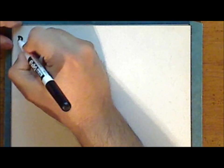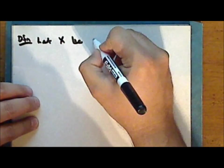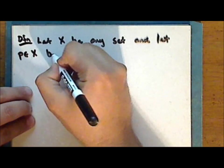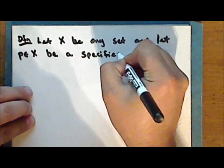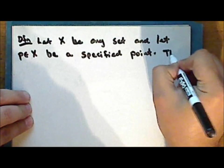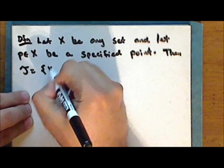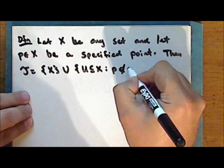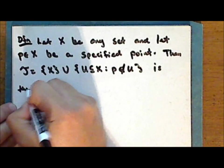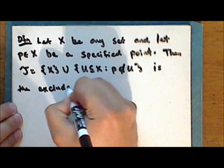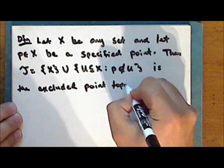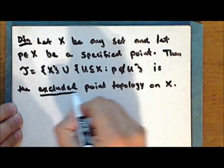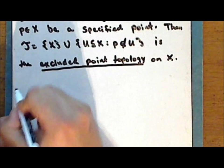Next we'll define a similar topology. Let X be any set, and let the point P in the set X be some specified point. Then the collection tau consisting of the union of the set which contains the entire set with the set of all subsets of the set X such that the point P is not in that subset is the excluded point topology. We will show that this collection is a topology.